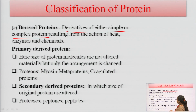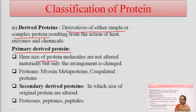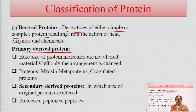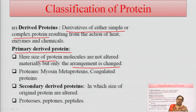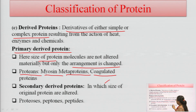In primary derived proteins, the size of the protein molecule is not altered — they have the same structure, but only the arrangement of amino acids is changed. Examples include metaproteins and coagulated proteins.